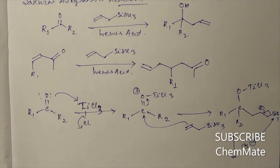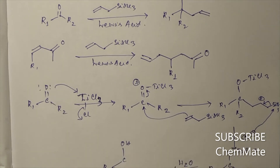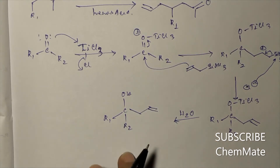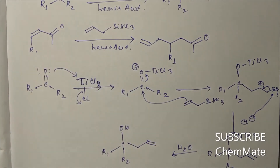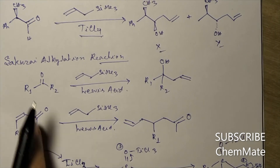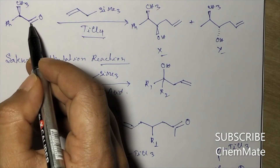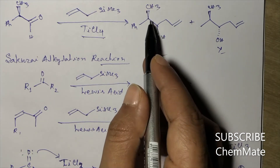The Cl⁻ which is eliminated will attack the silicon, and a pi bond will form. Now if it is worked up with water, it will be converted to OH, giving the final product. This 1,2-addition will take place in the same way. Now we go to our question: the nucleophile will attack the carbonyl group, converting it to OH and attaching at that carbon.